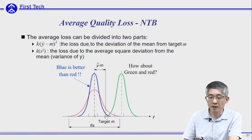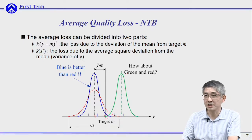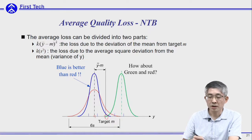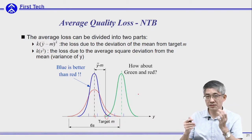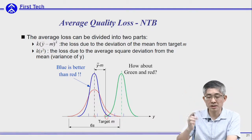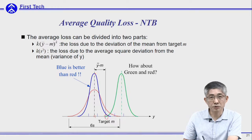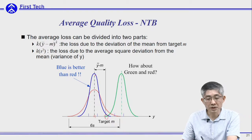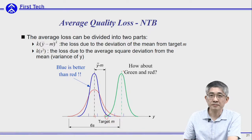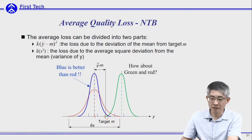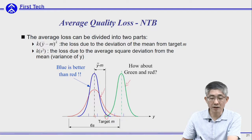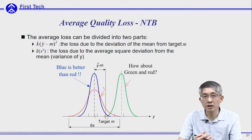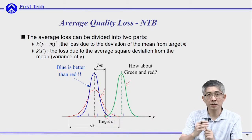Comparing the blue and the green design using similar criteria: assume these two designs have the same standard deviation, so their distributions look very similar, but they center at different places. If the average of the blue design is closer to the target than the green design, then using the average quality loss, the blue design is better. For the green versus red comparison, it is not as obvious, but you can still use the average quality loss to determine which design is better.